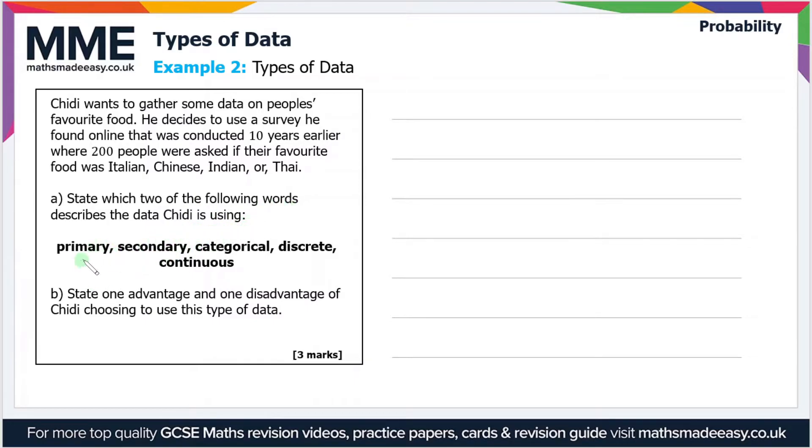Well, first of all, primary. So primary data is any data that you've gathered yourself, but it says he used a survey that he found online, so that's obviously someone else that's gathered the data. So it can't be primary. And now, if it's not primary, it has to be secondary. So in other words, someone else gathered the data, so we'll take that one.